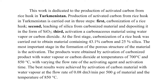At the first stage, carbonization of rice husk was carried out to obtain material containing 43.1% carbon and 25% silica. The most important stage in the formation of the porous structure of the material is the activation. Products were obtained by activation of carbonized product with water vapor or carbon dioxide at temperatures of 700°C or 850°C with varying flow rate of activating agent and activation time. The best results were achieved by activation of carbon material with water vapor at a flow rate of 0.08 decimeter cubed per minute per 500 grams of material and a temperature of 850°C.